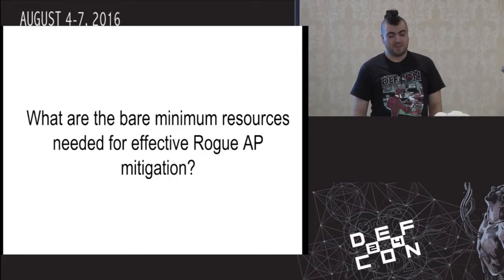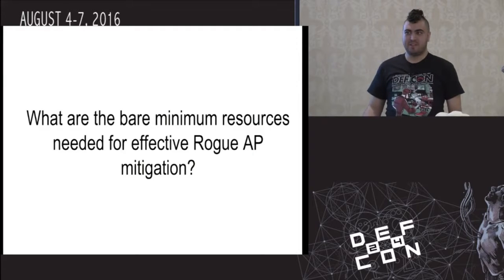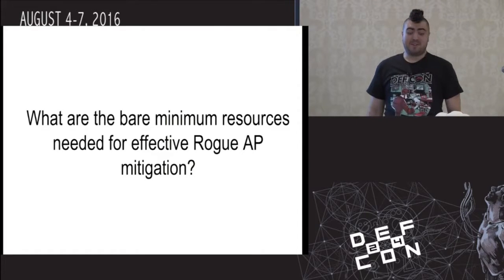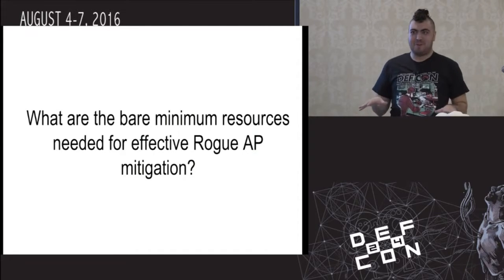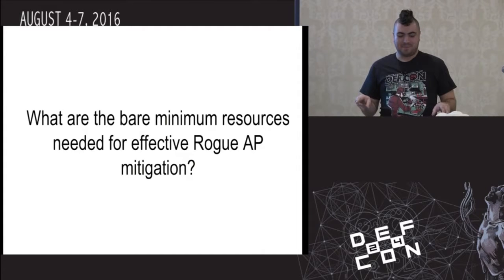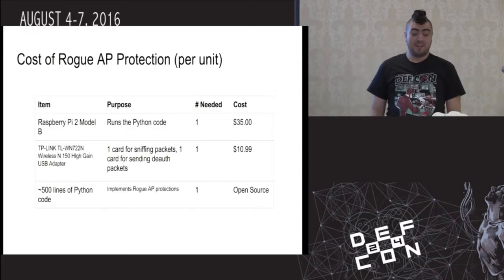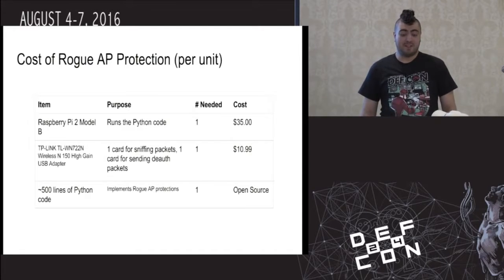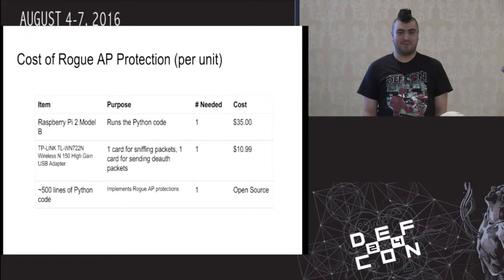So I think we need to ask ourselves: what are the bare minimum resources needed for effective rogue AP mitigation? If you have to run an open Wi-Fi network and need to provide rogue AP protection — we actually did this at B-Sides earlier in the week — using these algorithms, you can do this with just a Raspberry Pi, about 500 lines of Python code, a little more if you want client-server functionality, and a cheap $10 TP-Link adapter. That brings the cost of rogue AP protection down to about $45 per unit.